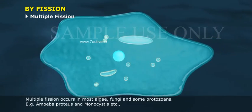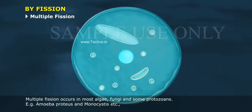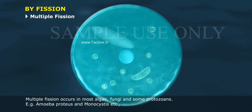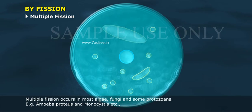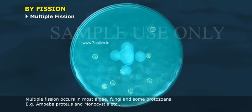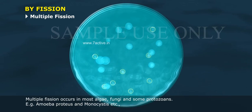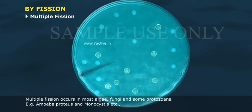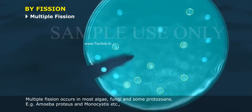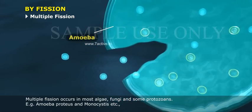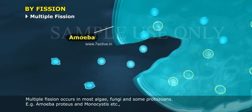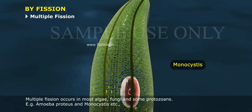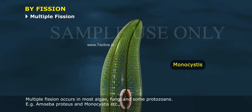Multiple fission occurs in most algae, fungi, and some protozoans, such as Amoeba proteus and Monocystis.